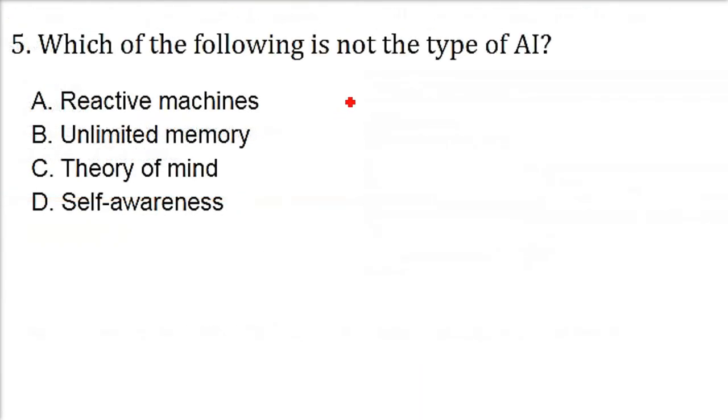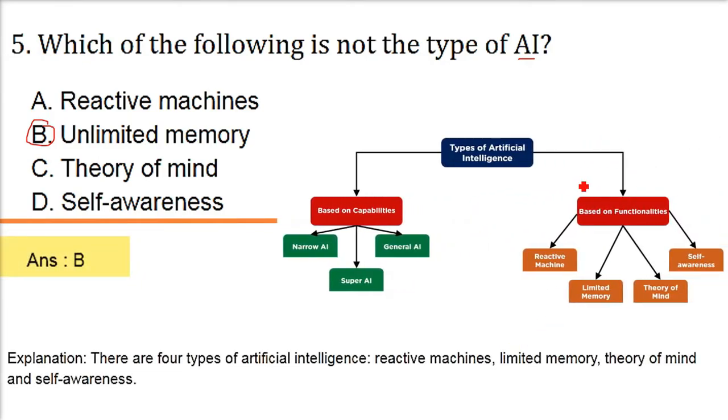Which of the following is not the type of AI? So in order to find type of AI, there are two categories we would like to divide it. The answer here is unlimited memory. But let me show you the types of artificial intelligence. This can be divided into two broad categories: based on capabilities, it can be narrow AI, super AI, and general AI. But when we are talking about the types of artificial intelligence on the basis of functionalities, it will be reactive machine, limited memory, theory of mind, and self-awareness. So if you see in this question, the B part is unlimited memory. It should be limited memory. That is why B is the answer here.